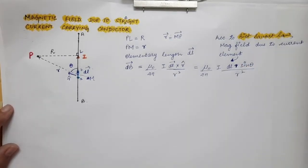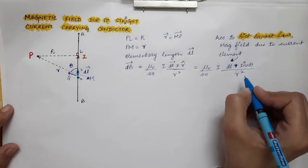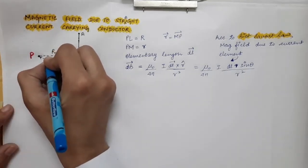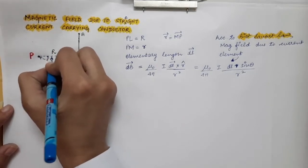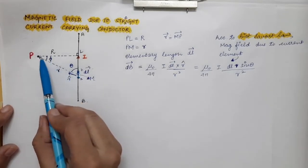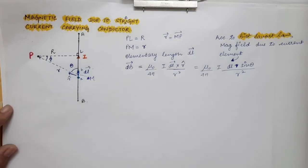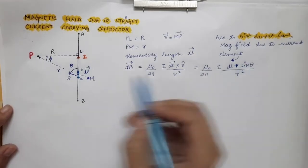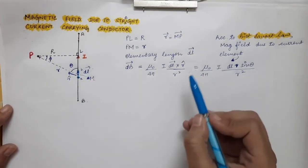Now what we will do is, to find out the final expression, we will find all these variables in terms of phi. Phi is this angle — phi is the angle between LP and PM. Now we are going to find all these variables in terms of phi, because to integrate we need a single variable.